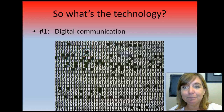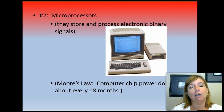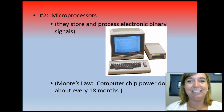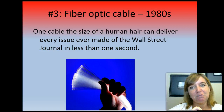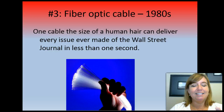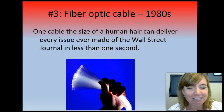What technology is needed to make all this happen? Number one, you have to have digital communication. You have to have microprocessors. Moore's law says that computer chips basically double in power every 18 months — so when you leave Best Buy with your new computer, it's pretty much outdated by the time you get to the parking lot. The next big technology needed for the internet explosion is the fiber optic cable. This tiny little hair can transmit every issue of the Wall Street Journal ever published in about one second. The digital communication, microprocessors, and fiber optic cable all came together at the same time to make the internet accessible and fast.